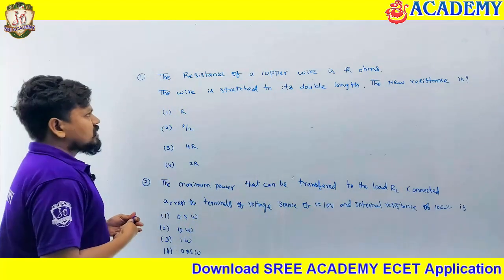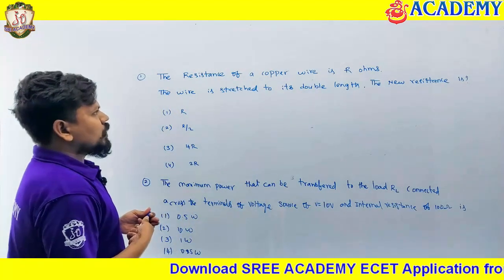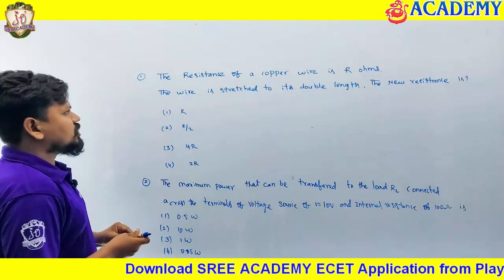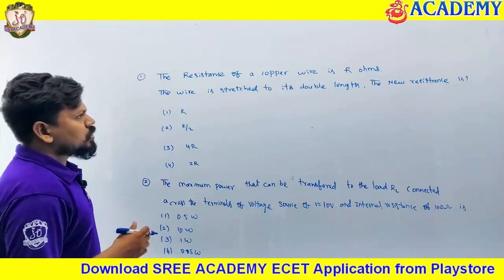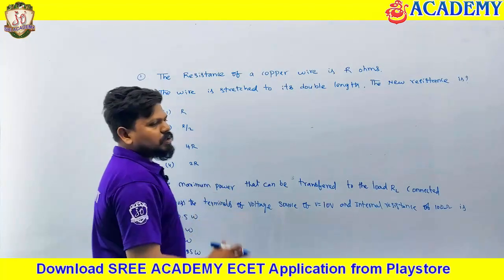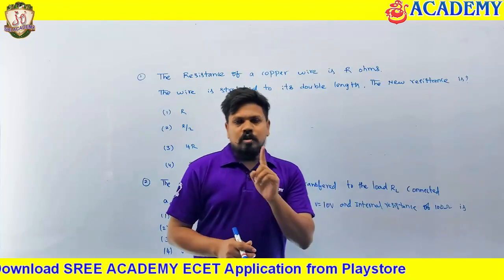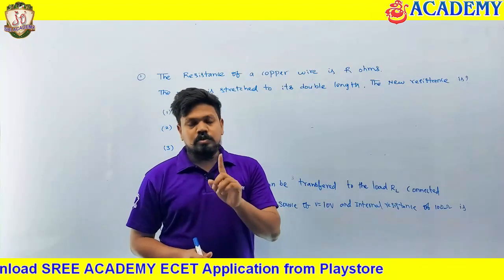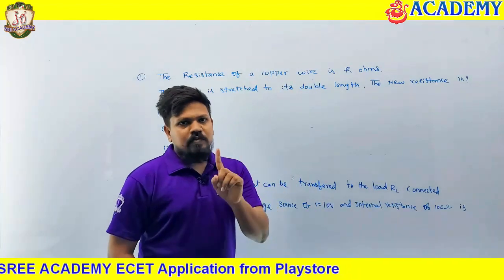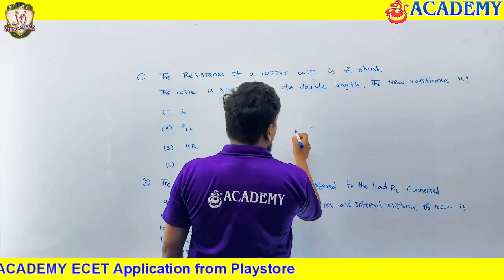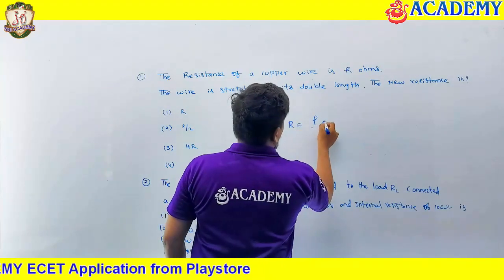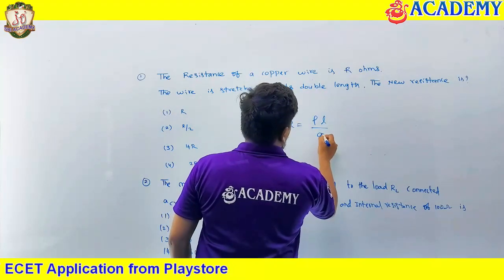First question: the resistance of a copper wire is R ohms. The wire is stretched to its double length. The new resistance is? Remember, you have to read the question only one time. The resistance formula is R equal to rho L divided by A.